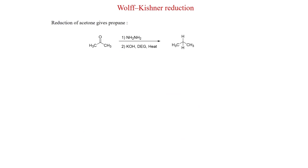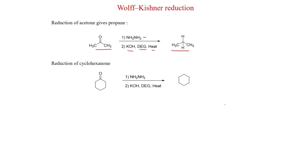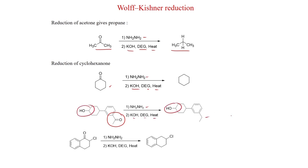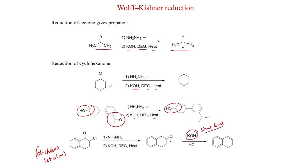Examples: reduction of acetone with hydrazine, KOH, diethylene glycol, and heat gives propane. Cyclohexanone under the same conditions gives cyclohexane. If a hydroxy group is present along with the ketone motif, the alkane is obtained and the hydroxy group is untouched. Alpha-chlorotetralone treated with hydrazine, KOH, diethylene glycol, and heat gives an unsaturated compound, because KOH is a strong base — E2 elimination occurs to give the unsaturated product.